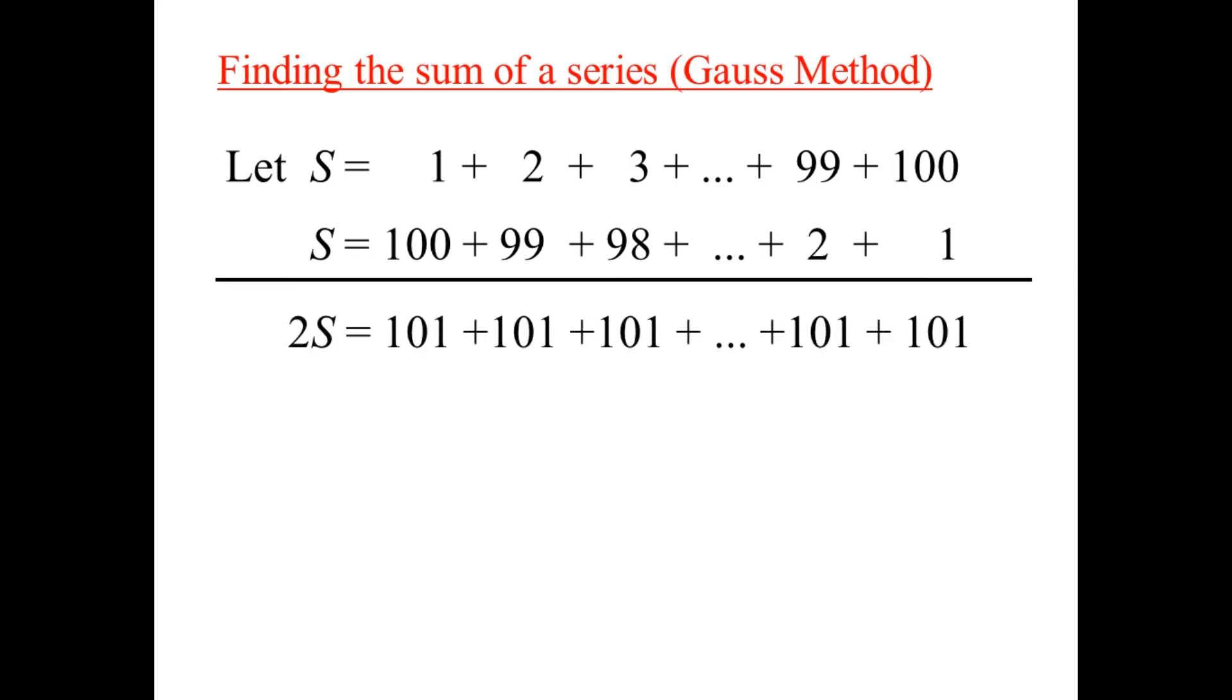So twice what you want is, well, you're looking, twice what you want is a whole bunch of 101s. 100 plus 1, 99 plus 2, 98 plus 3, a whole bunch of 101s. How many 101s? Well, we can count them. 100, 101s.